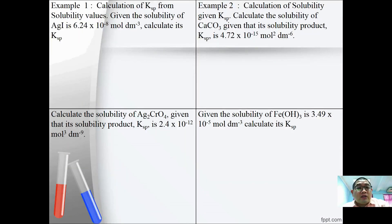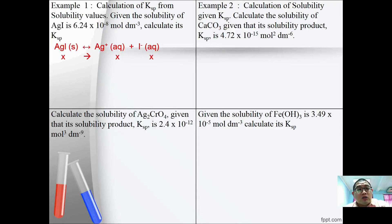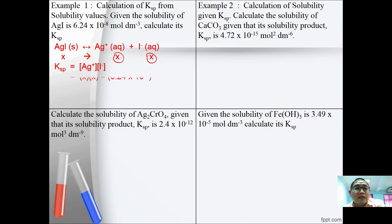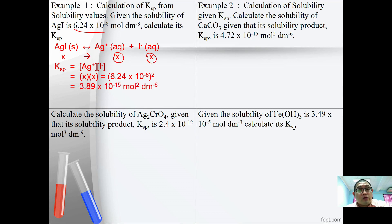Example 1: Given the solubility of AgI is 6.24 × 10⁻⁸ mol dm⁻³, calculate its KSP. Write the dissociation equation: AgI → Ag⁺ + I⁻. If x mol dm⁻³ of AgI dissolves, then [Ag⁺] = x and [I⁻] = x. KSP = [Ag⁺][I⁻] = x² = (6.24 × 10⁻⁸)² = 3.89 × 10⁻¹⁵ mol² dm⁻⁶.